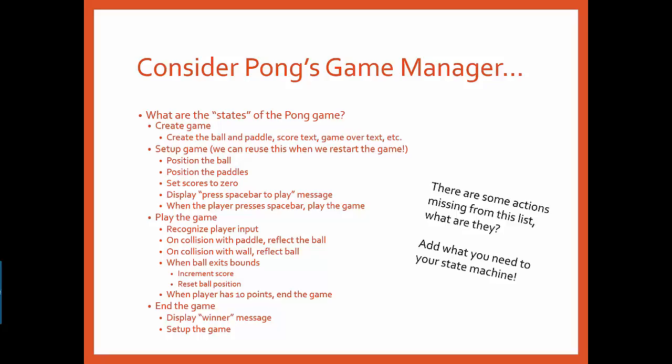I've specifically left out a few actions from this list. What are they? How will you add them into your state machine appropriately? Also, not all of these are necessarily states. Some of these are actions associated with the entry or the exit of a state. Some of them represent transitions. Some of them even represent guards on transitions. You need to pick the appropriate place to document each of these actions for the pong game manager.